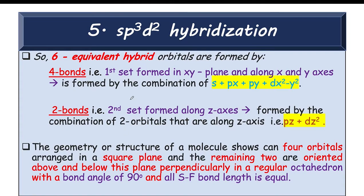So 6 equivalent hybrid orbitals are formed, 4 orbitals or 4 bonds are formed in 1 plane. That is the first set is formed in xy plane and along the x and y axis.